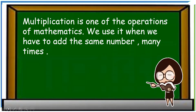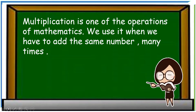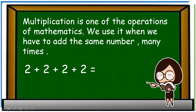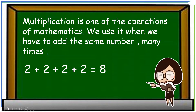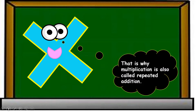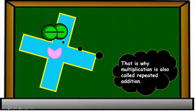Multiplication is one of the operations of mathematics. We use it when we have to add the same number many times. For example, two plus two plus two plus two is equal to eight. Here we are adding two many times. That is why multiplication is also called repeated addition.